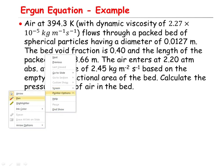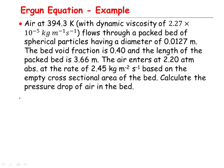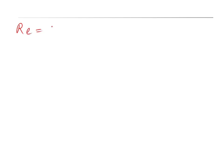To solve this question, you first need to calculate the Reynolds number so that you can decide which equation to use to calculate the pressure drop. The Reynolds number for flow through a packed bed is defined as: Re = (1 / (1 − ε)) × (ρ_f × v × d_p) / μ, where ε is the porosity.